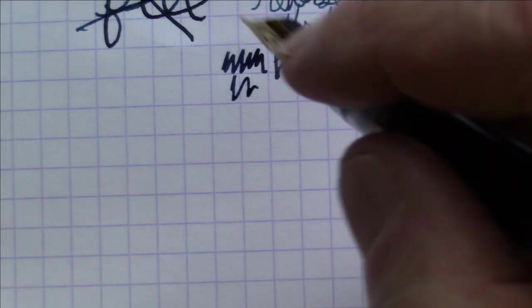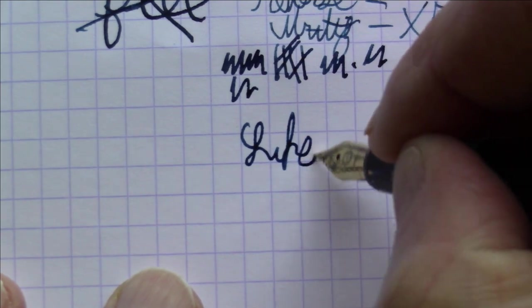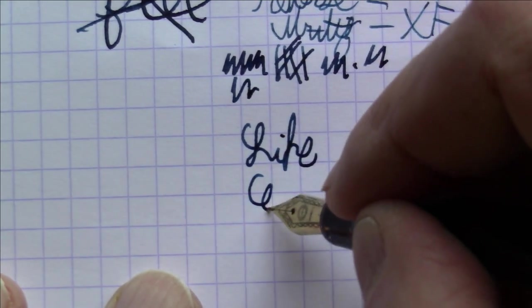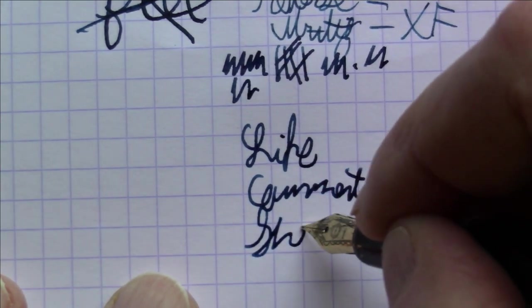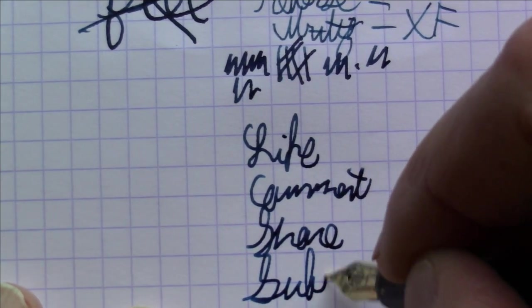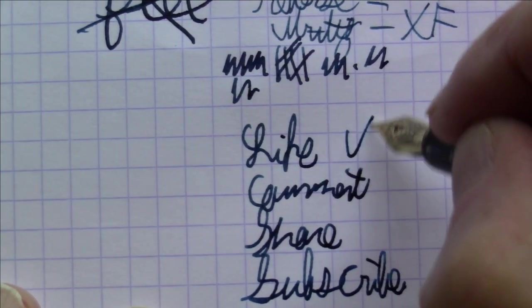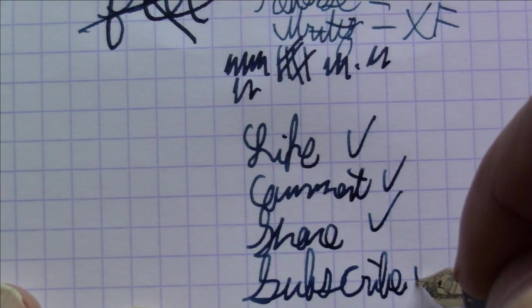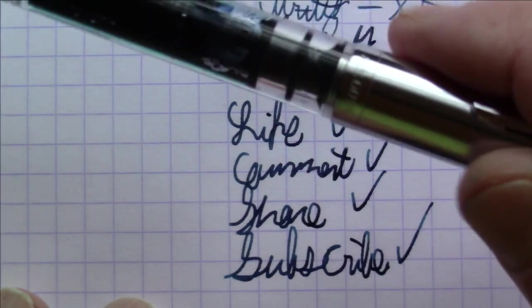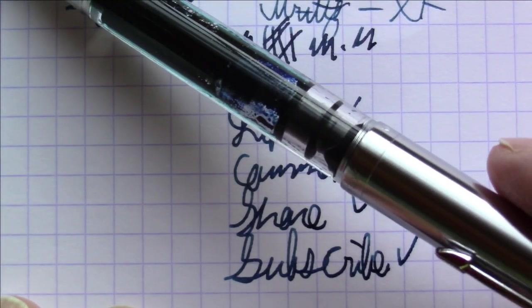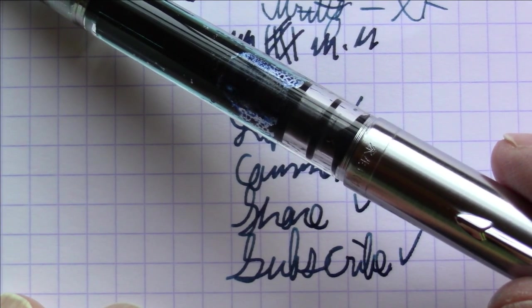Speaking of liking, it would be really great if all of you out there could please like, comment, share, and subscribe. That would all be most welcome. So that's this Wingsung 601A variant. Like I said, you have a lot of options here in this 601 family.